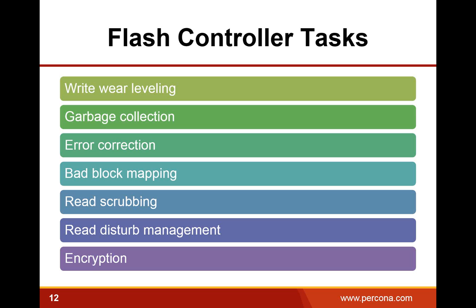Let's talk more about controllers and what they do. One function is called write wear leveling. Because there is a limited number of times you can program a flash cell, and some data is modified over and over again — like a visit counter on a page — the flash controller will constantly change where that data piece is persisted to ensure as even as possible distribution of writes across all available space. It also has to do garbage collection: because we cannot write data in an old location, we are constantly writing to new space, and the old space starts to contain holes like Swiss cheese. Garbage collection relocates data so complete blocks can be erased and reused.